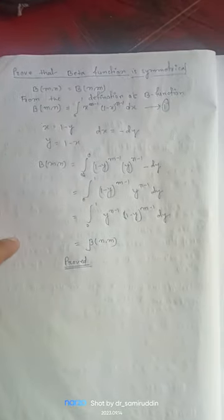From the definition of beta function, we have beta mn is equal to integration from 0 to 1, x to the power m minus 1, 1 minus x to the power n minus 1, dx.